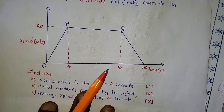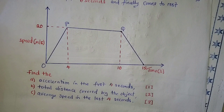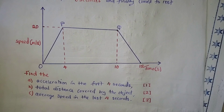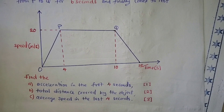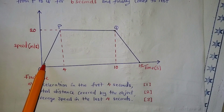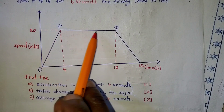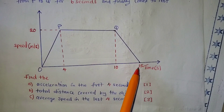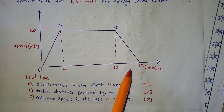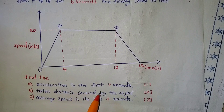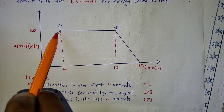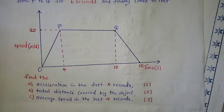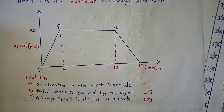Looking at the diagram: this section is acceleration, this is constant velocity, and this is deceleration. The first sub-question asks us to find the acceleration in the first 4 seconds — it is worth just one mark.